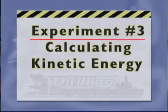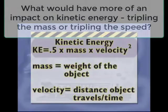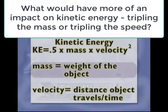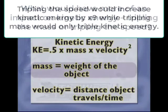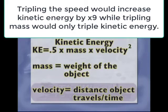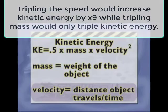In our next thrilling experiment, I thought we could calculate kinetic energy. In order to do so, we need to know the equation. It is kinetic energy, KE, equals 0.5 times mass times velocity squared. In this experiment, mass is the weight of the object and velocity is the distance the object travels, divided by the time it takes to get from point A to point B.